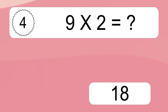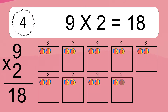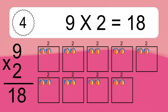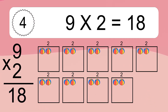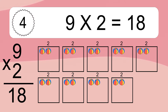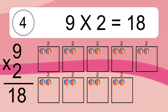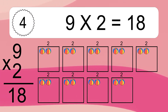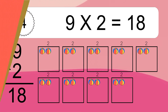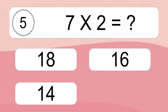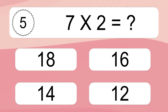9 times 5 equals what? 9 times 5 equals 18. We have 8 boxes, and each box has 2 colorful balls inside. If you count all the balls in all the boxes together, you will have 9 times 2 balls. This equals 18 balls.